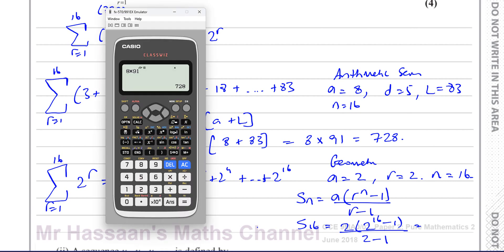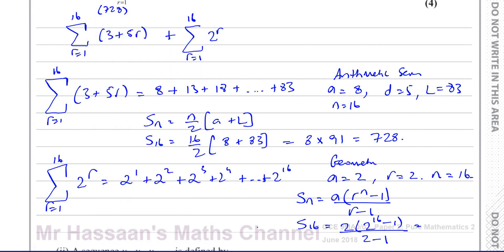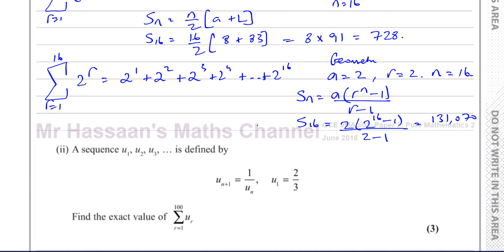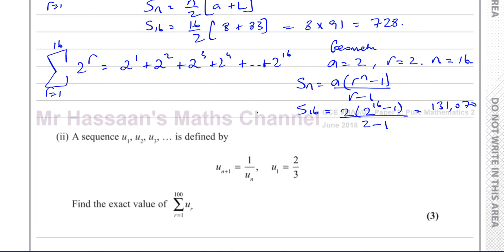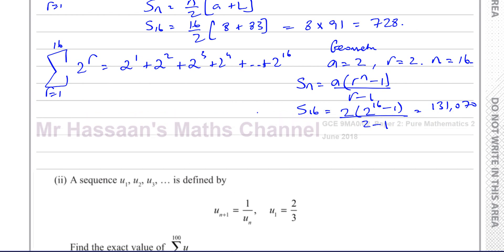So that gives me basically 2 times 2 to the power of 16 minus 1. Let me put that in our calculator. So we have 2, 2 to the power of 16, and then take away 1. That gives you 131,070.